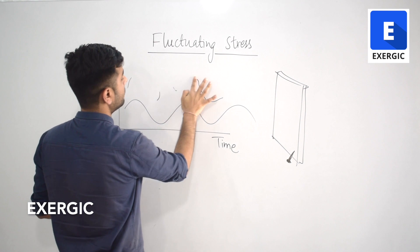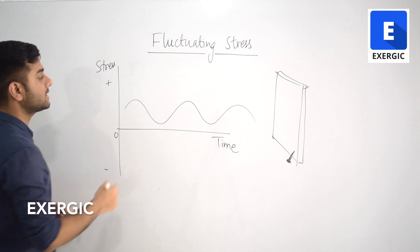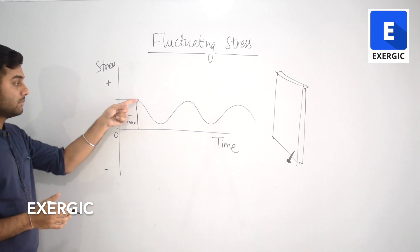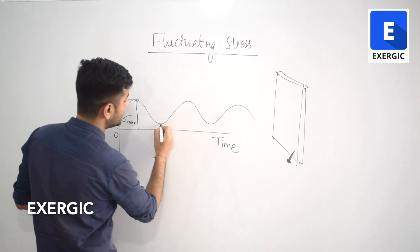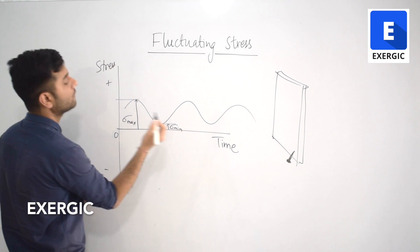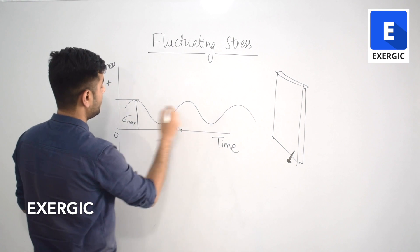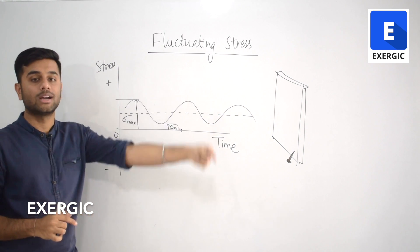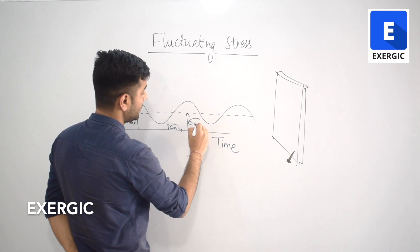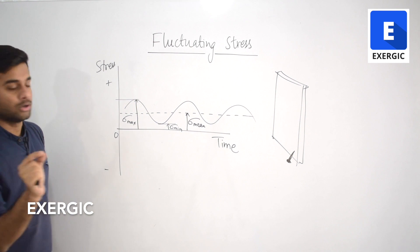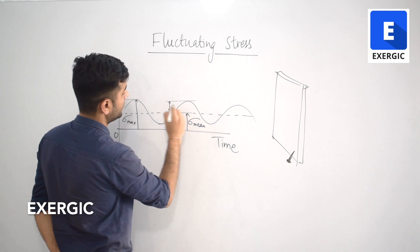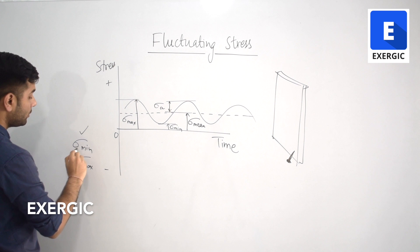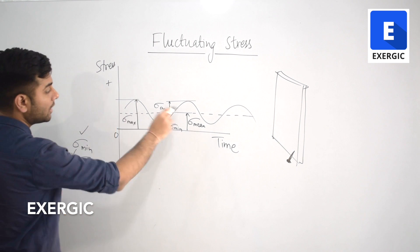If we have a sinusoidal variation, then what is the maximum value of stress reaching in it? This is the maximum value — let's call it sigma max, considering this to be normal stress. This is the maximum value of stress it can reach. Similarly, this value is sigma min, the minimum value of stress. This sinusoidal curve is oscillating about a dotted line — this is the mean value about which it is going up and down. So this is the mean value of stress, sigma mean, and it has oscillations of a particular amplitude — this much is the amplitude, denoted by sigma a. So we have four parameters: sigma min, sigma max, sigma mean, and sigma a.